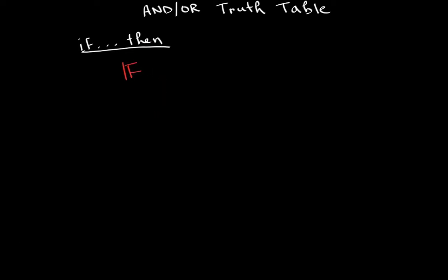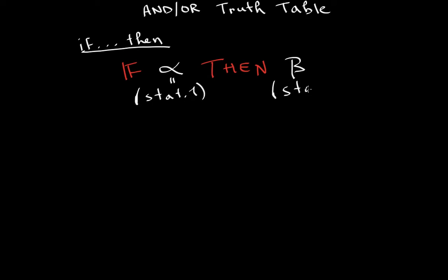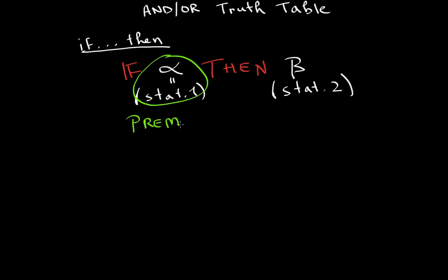So it's easier for you to understand. If alpha holds, then beta. So instead of writing statement one and two, I'm writing alpha and beta. Beta is equivalent to statement one, and beta is equivalent to statement two. So if statement one, then statement two, which is the same as if alpha, then beta. So alpha is called the premise — the thing that comes after 'if' will be called the premise. And beta is called the conclusion — anything that comes after 'then' will be called the conclusion.